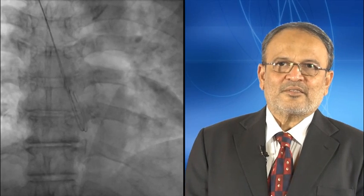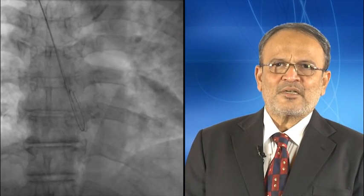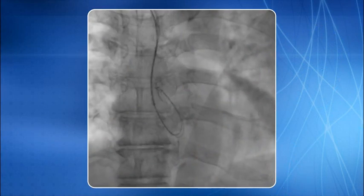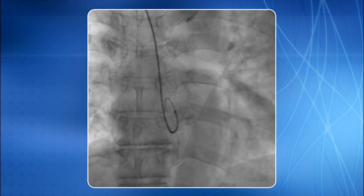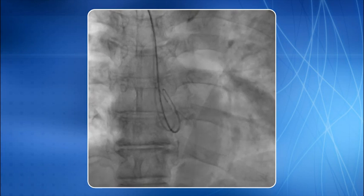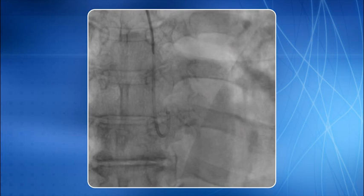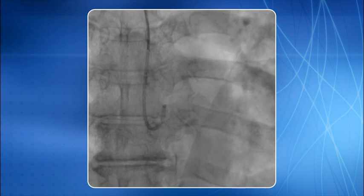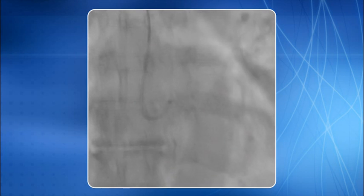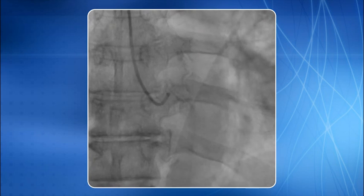I will now show you the left coronary cannulation using the left Judkins catheter. A standard 0.035 inch guide wire is kept in the ascending aorta keeping a loop. The left Judkins diagnostic catheter is negotiated over it. The guide wire is removed inside the catheter. A slow pullback of the catheter is started, and the LCA ostium is cannulated.